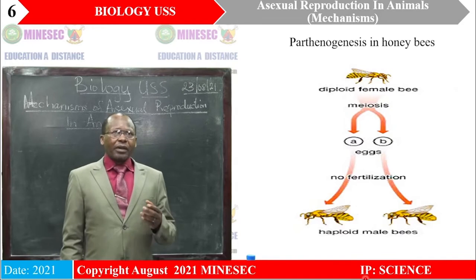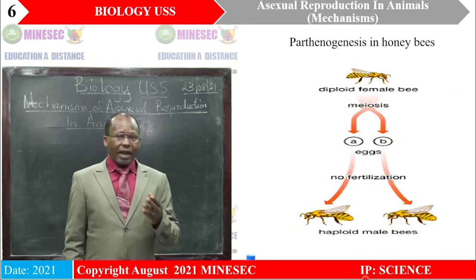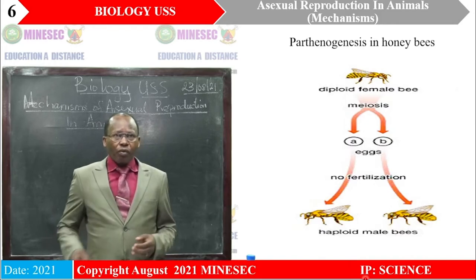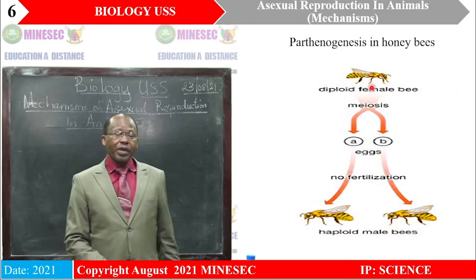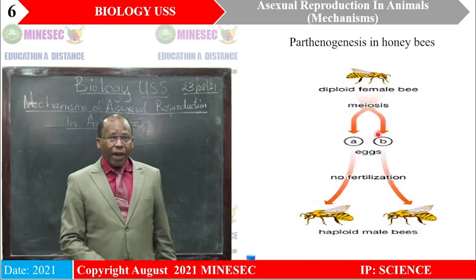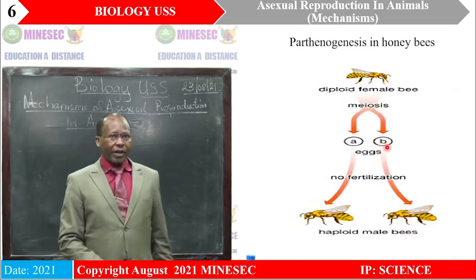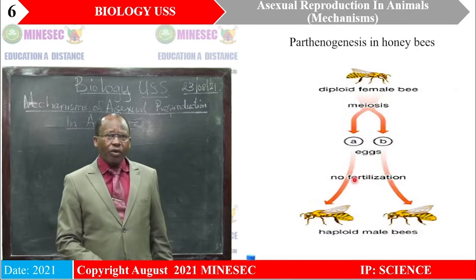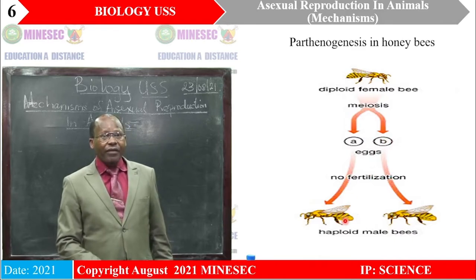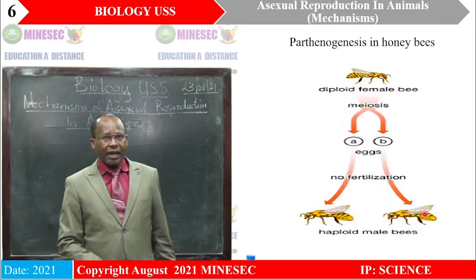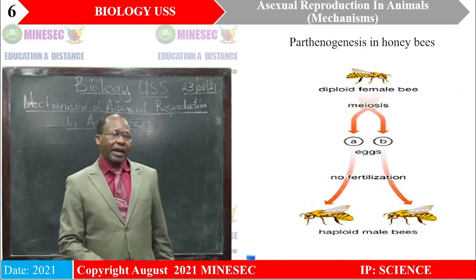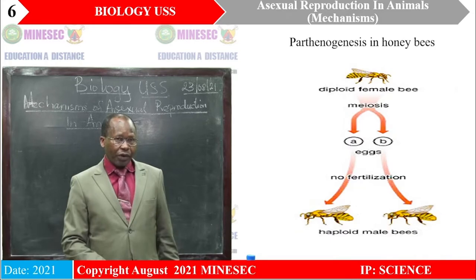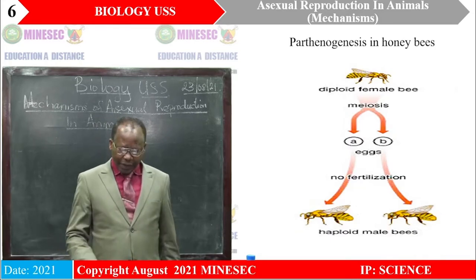Here is an example of an organism that undergoes Parthenogenesis — the honeybee. We see a diploid female bee that produces eggs by meiosis, implying the eggs formed will be haploid. If there is no fertilization of these eggs, then each haploid egg will develop into a haploid male bee, which we call the drone. Since these drones are haploid, they will be sterile and will not be able to produce gametes. We are going to look further into these aspects as we proceed.